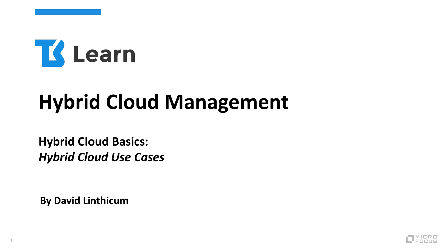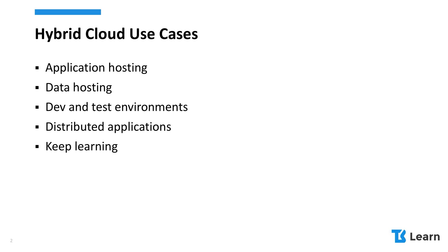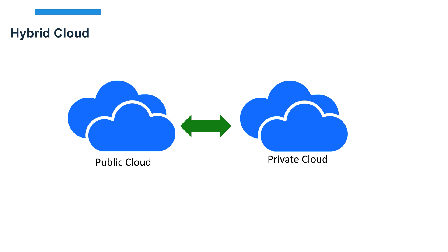In this video we're going to talk about the different use cases of hybrid cloud — basically how you apply it in your enterprise to make it work for the business. We'll cover application hosting, data hosting, dev and test environments, and distributed applications. Private cloud and public cloud paired together is really what a hybrid cloud is, and this is about dealing with two separate platforms and putting the right workloads on the platforms where they'll be most effective.